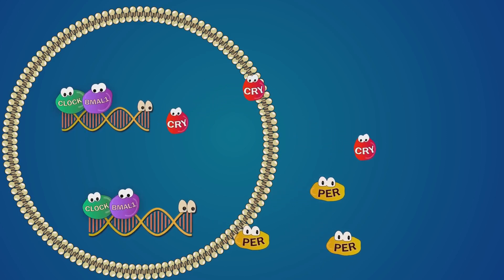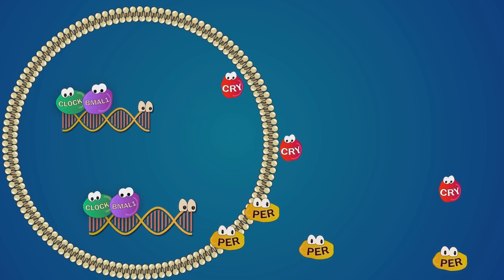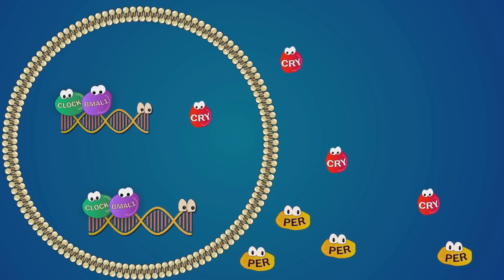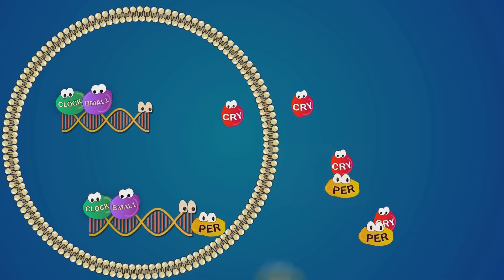But this cytoplasm is stuffed full of proteins and many of them get destroyed by different enzymes. Eventually, the synthesis of new ones outplays the destruction and after a delay of about 12 hours, per and cry finally bind together, also forming a complex.